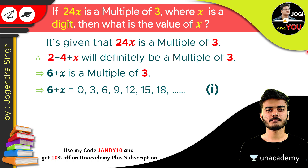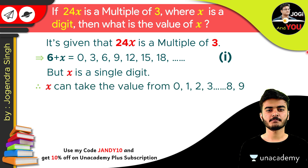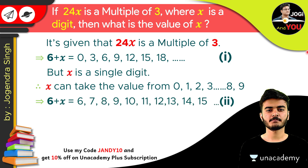The second condition is that x is a single digit number. There were two conditions in the question: first, 24x is divisible by 3, and second, x is a single digit. In that case, x can take values from 0 to 9 — we cannot use 10 because that is a double digit number. So 6 plus x could range from 6 to 15 continuously.